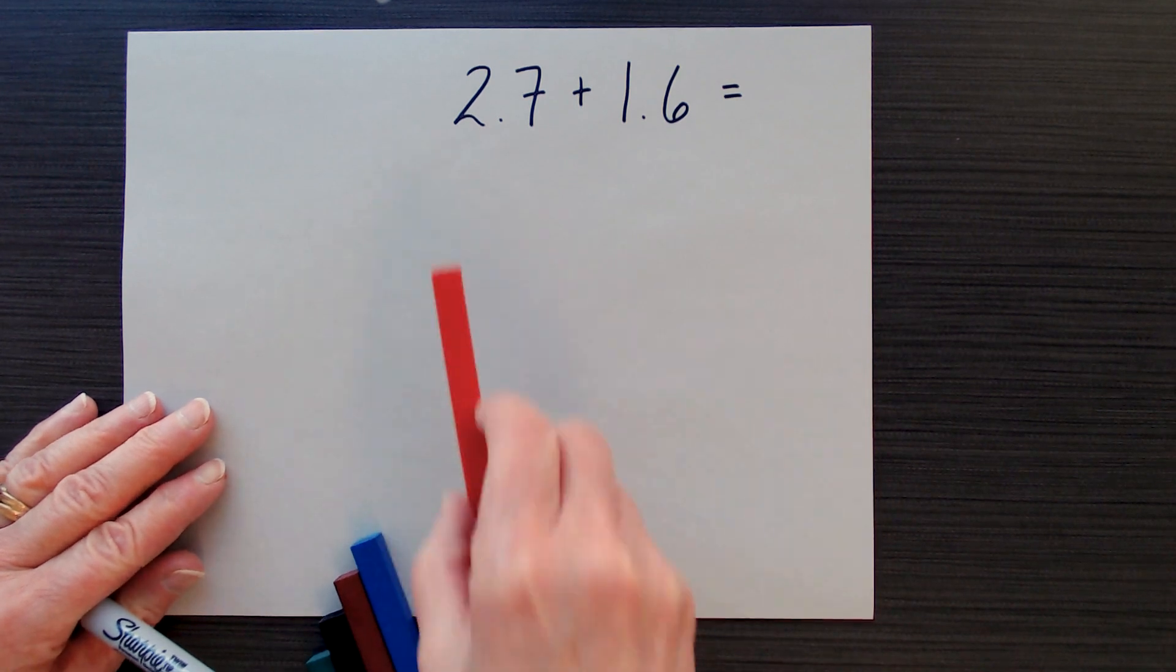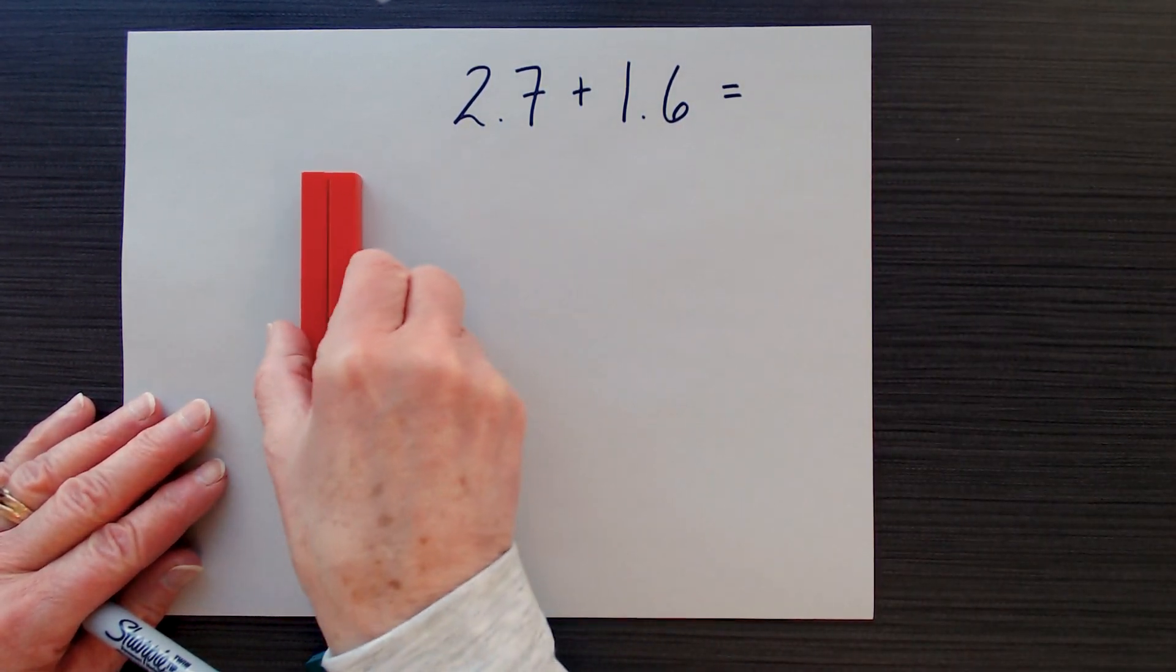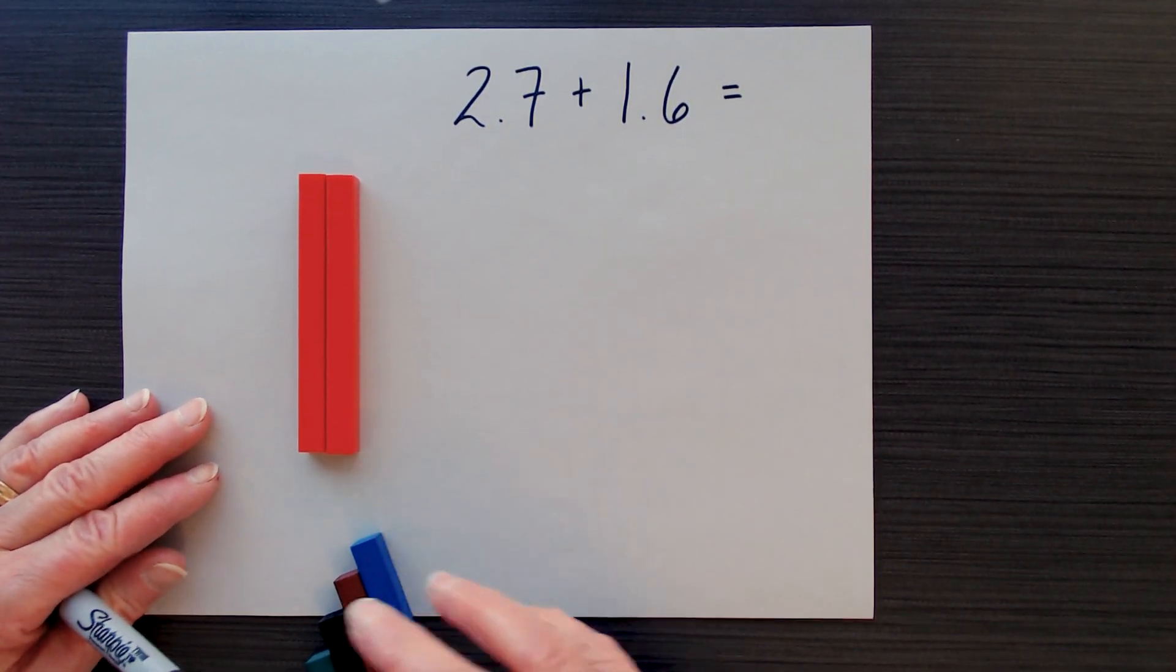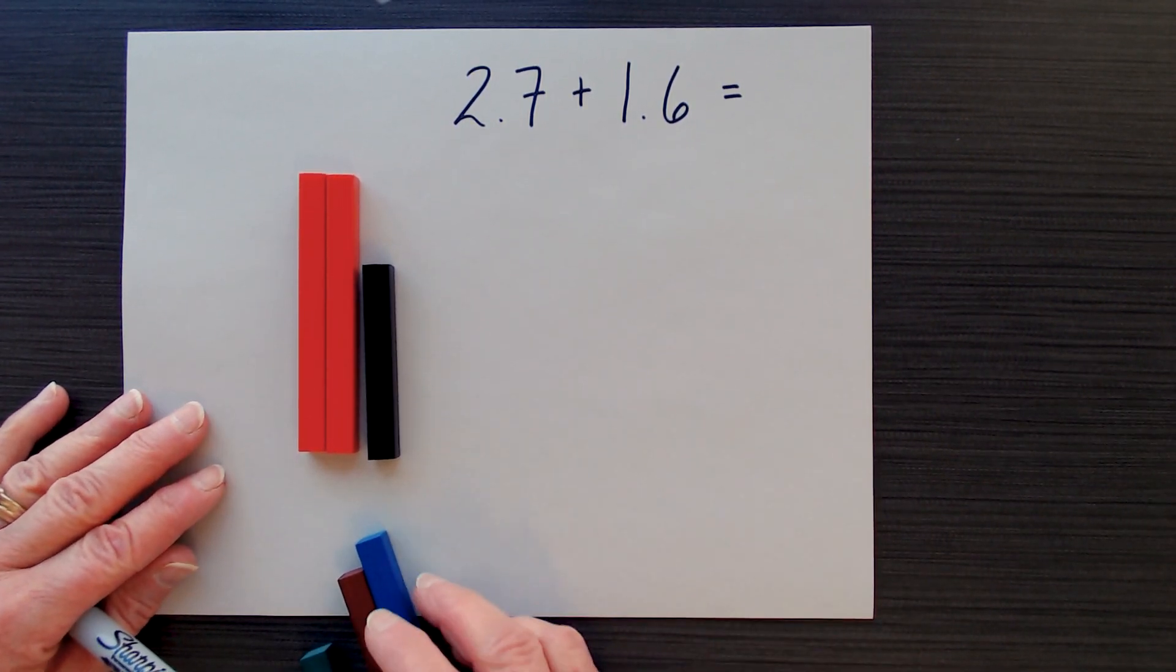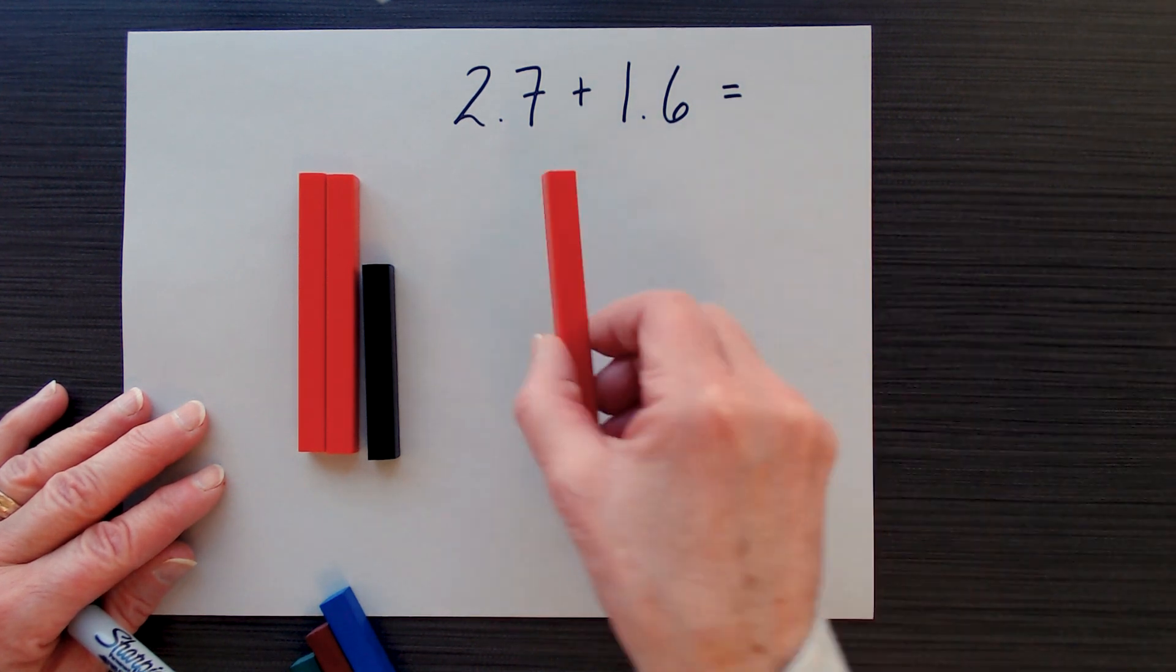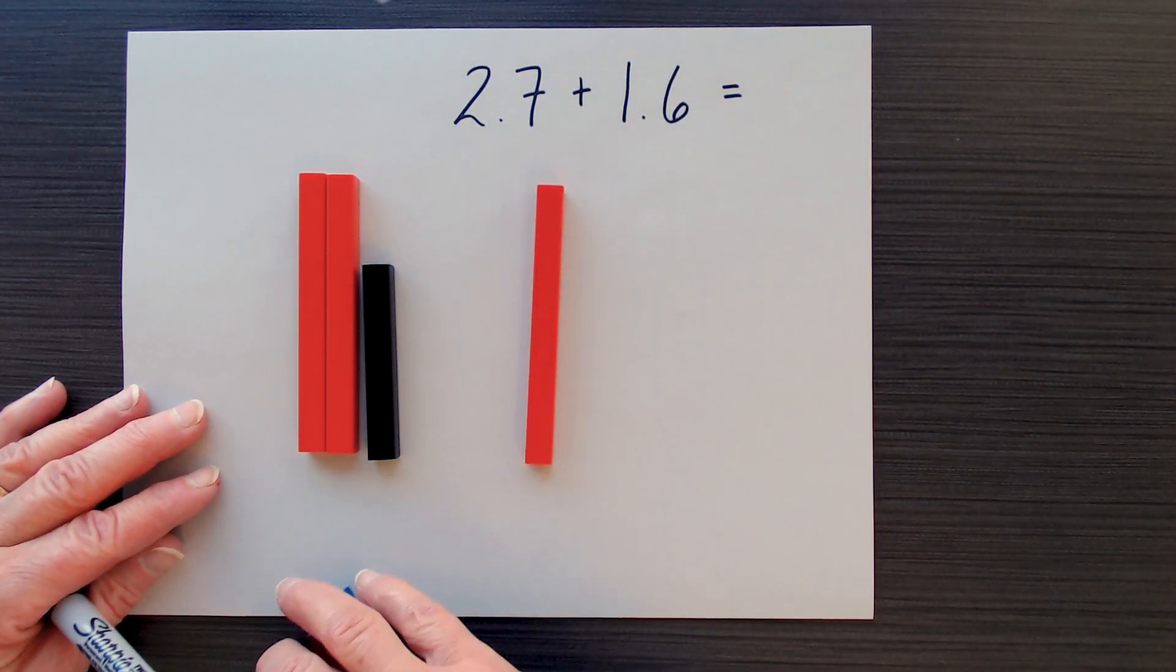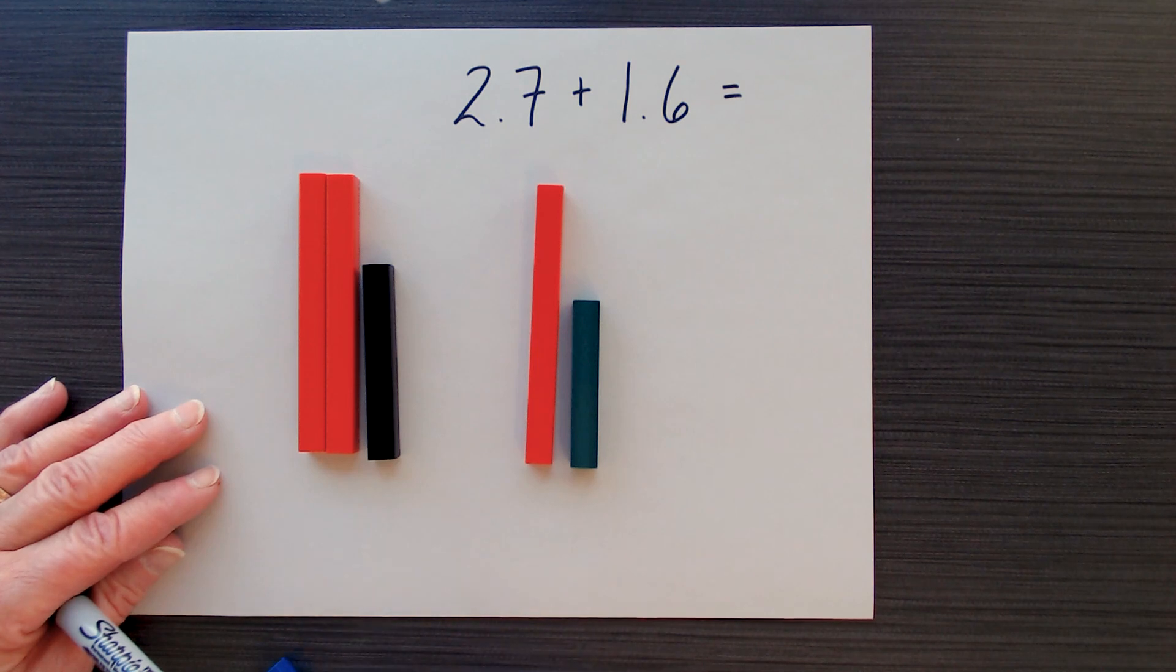So what I'm going to do is I'm going to represent the 2 and then I want to represent 7 tenths. So this is 2 and 7 tenths. Now I want to represent 1 and 6 tenths.